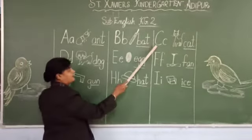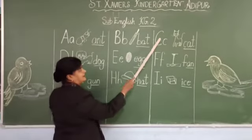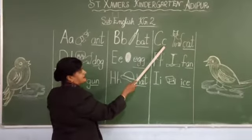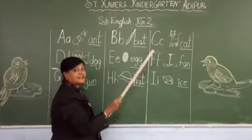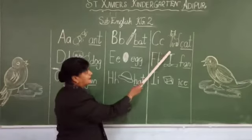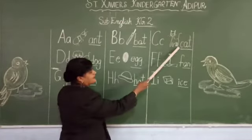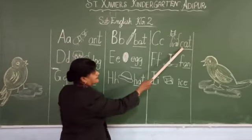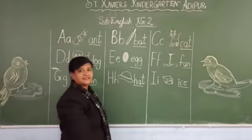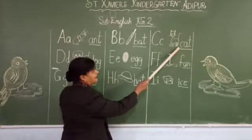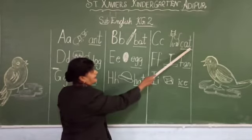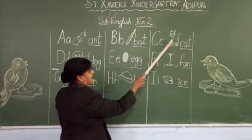Very good. Our next alphabet is C. This is capital C, small c. C is for cat. Meow, meow, meow. How do you spell cat? C, A, T. Cat. Come on, say along with me? C, A, T. Cat.